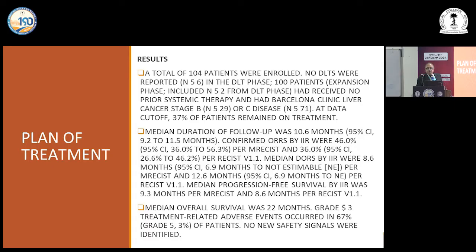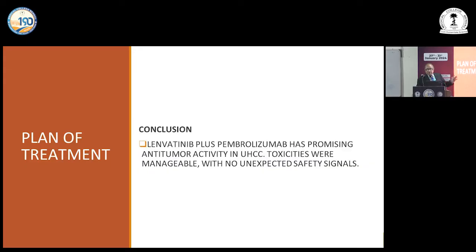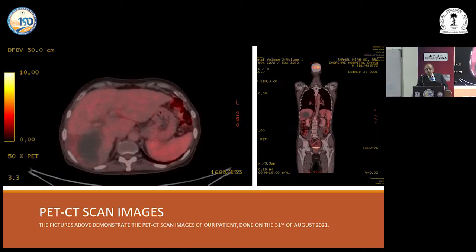Only a 104-patient phase 1 dose-limiting toxicity trial had been done, and the results with Pembrolizumab were promising. At that time, the standard of therapy was Atezolizumab plus Bevacizumab, but Atezolizumab was quite costly. Pembrolizumab was available at a lower cost at that time. The result: the tumor totally vanished after 5 cycles with 21-day intervals — this response is remarkable.